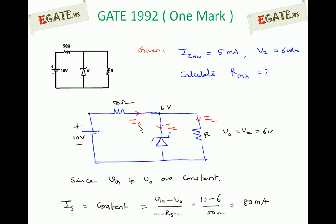Since V input and V0 are constant, IS, the current flowing through 50Ω, is constant. The value can be calculated using V input minus V0 by RS, which is 10 minus 6 by 50Ω, which equals 80mA. So 80mA constant current is flowing.